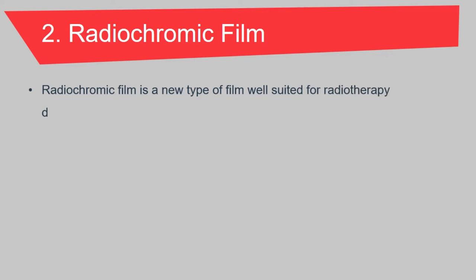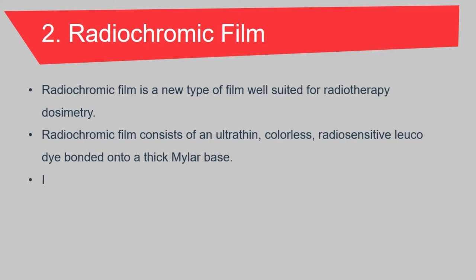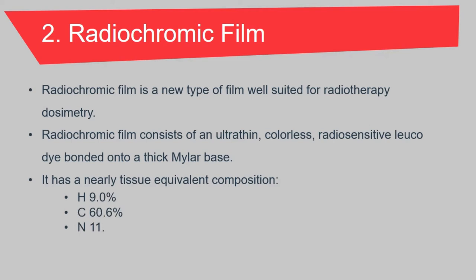Next is radiochromic film. Radiochromic film is a new type of film used for radiotherapy dosimetry. This film consists of an ultra-thin, colorless, and radio-sensitive leuco dye coated onto a thick mylar base. This film has a nearly tissue-equivalent composition, made up of 9% hydrogen, 60.6% carbon, 11.2% nitrogen and 19.2% oxygen.